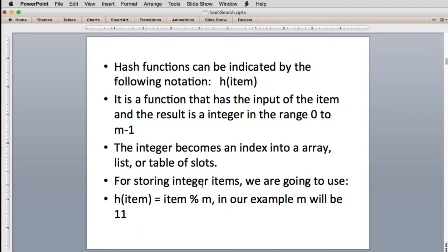For storing integer items, we're going to use this function first. H(item), so the hash function will take the item, which is going to be integers. We're actually going to store integers. And we just take modulo m, which is the size of our table. And we're going to have a table of size 11. So we're just going to be modulo 11. And you're going to see that all through our code for this part of the chapter.